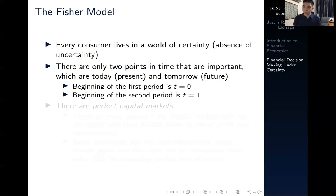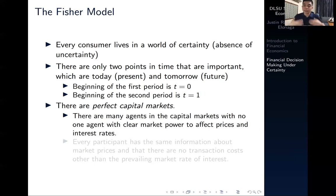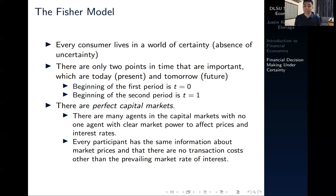Another key assumption of the Fisher model in the context of financial decision making under certainty is that capital markets are perfect in nature. Perfect capital markets simply means there are many agents and no one agent has a clear advantage over another in affecting the prevailing market price or interest rates — essentially a perfectly competitive capital market. There is also no information asymmetry; every participant has the same information about market prices, and there are no transaction costs or barriers other than the prevailing interest rate.